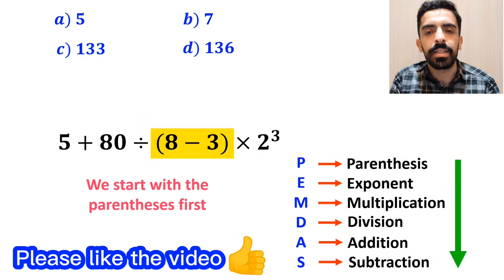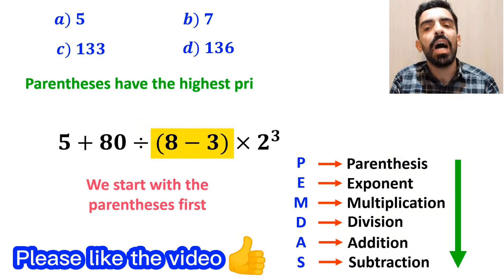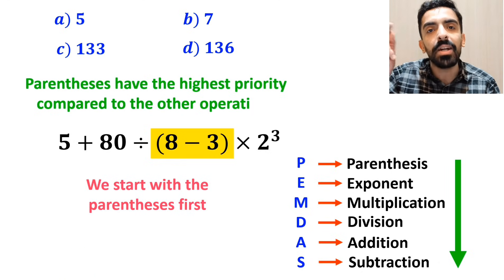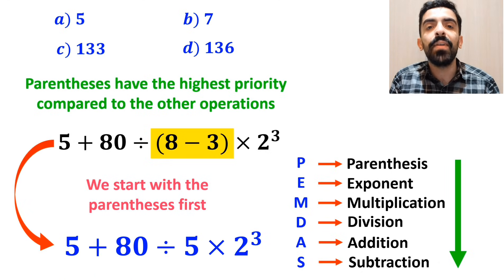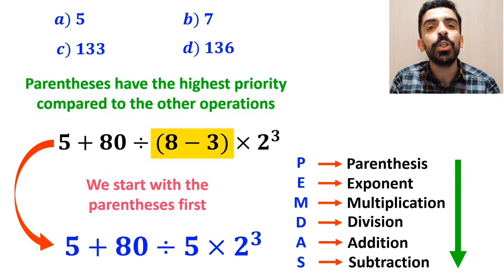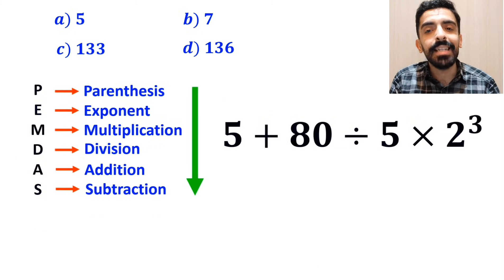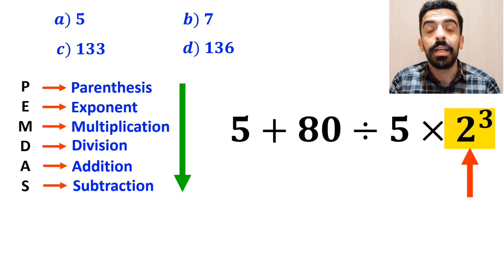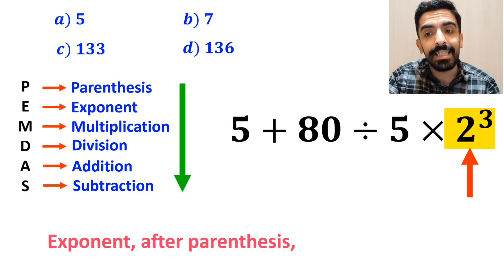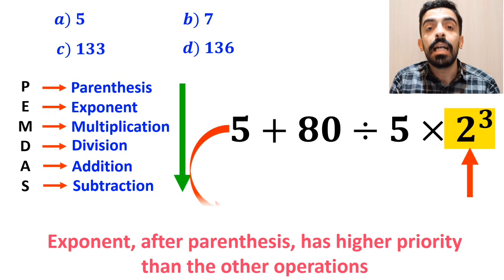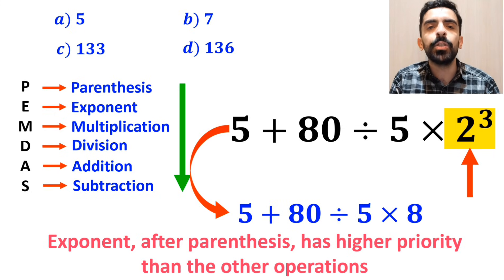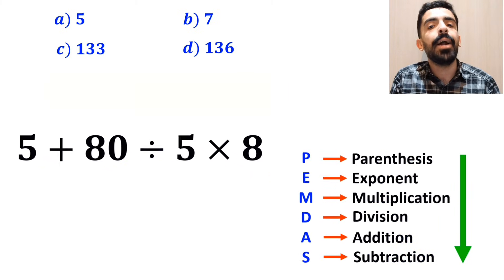We'll start with the parenthesis first, because parenthesis have the highest priority compared to the other operations. So, instead of this expression, we can write 5 plus 80 divided by 5 times 2 to the power of 3. In the next step, we go to the exponent, because after parenthesis, exponents have higher priority than the other operations. This expression simplifies to 5 plus 80 divided by 5 times 8.